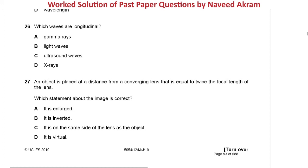The next question is from May/June 2019 paper 1 variant 2 question 27: an object is placed at a distance from a converging lens equal to twice the focal length of the lens. Which statement about the image is correct? Option A says it is enlarged — when the object is placed at 2F the image is not enlarged, it is the same size. So A is wrong. Option B says it is inverted — yes, it is a real image and it is inverted, so option B is the right answer.